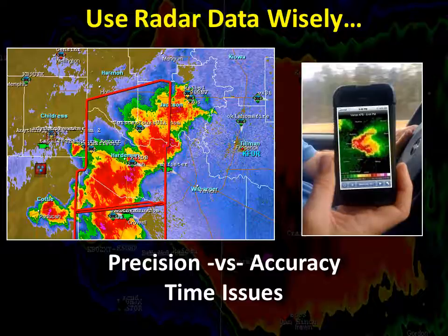But you do need to be aware that even the most sophisticated radar data has its limitations. Be sure that you don't confuse precision with accuracy when it comes to radar data. Websites, software, and applications make it possible to display radar data on highly detailed background maps that can show a precise location, like a street intersection where a radar signature is located. However, with radar data, precise doesn't always mean accurate. Depending on a variety of factors, including distance from the radar, the location of the radar signature may be miles from where the actual weather is occurring.